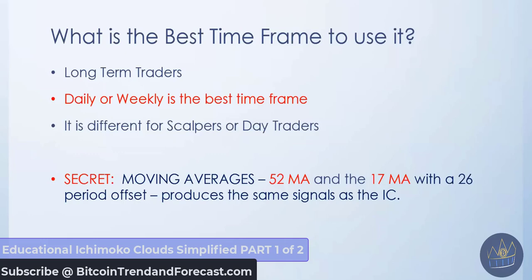It's very different for scalpers and day traders, and we teach that in our courses. But here is a secret I want to share with you: the 52 moving average MA and the 17 MA, if you put those on your chart with a 26-period offset, produce the same signals that you'll get from Itchy Moco Clouds. So if the clouds are too confusing on your chart, plot the 52 MA and the 17 MA — when they cross, they will produce exactly the same signals as the Itchy Moco Clouds.